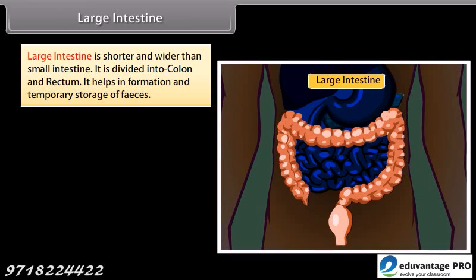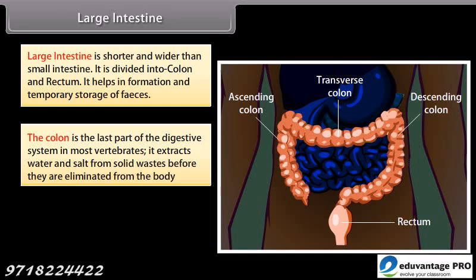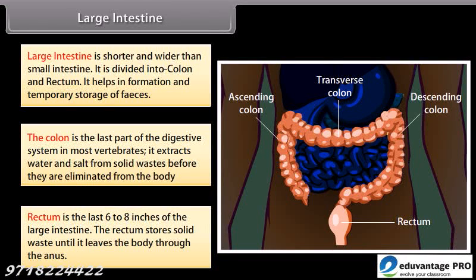The large intestine is shorter and wider than the small intestine, and is divided into the colon and rectum. It helps in the formation and temporary storage of feces. The colon is the last part of the digestive system in most vertebrates and extracts water and salt from solid wastes before they are eliminated. The rectum is the last 6 to 8 inches of the large intestine and stores solid waste until it leaves the body through the anus.